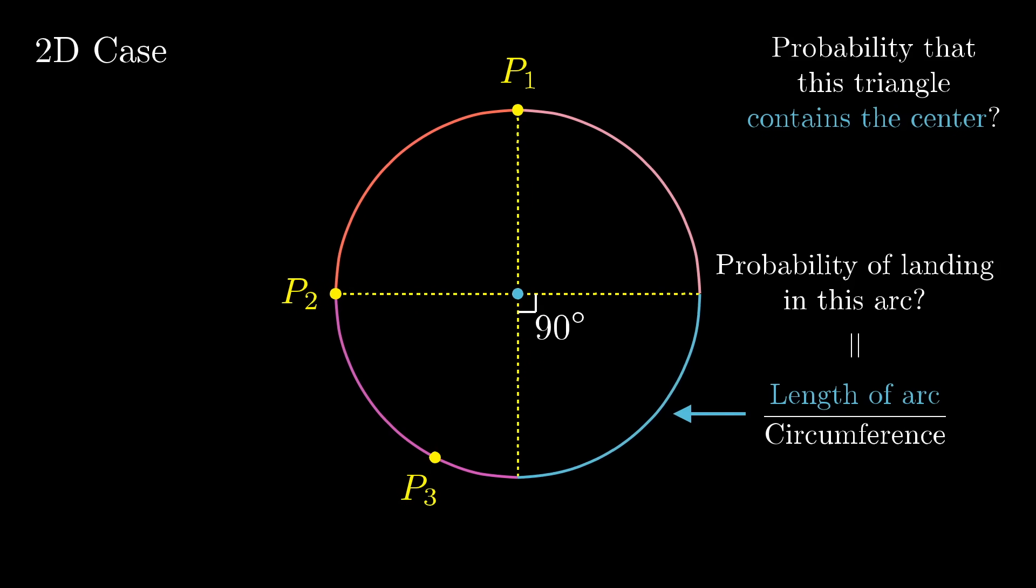Obviously that depends on where you put the first two points. I mean, if they're 90 degrees apart from each other, then the relevant arc is one quarter of the circle. But if those two points were farther apart, that proportion would be something closer to a half. And if they were really close together, that proportion gets closer to zero.